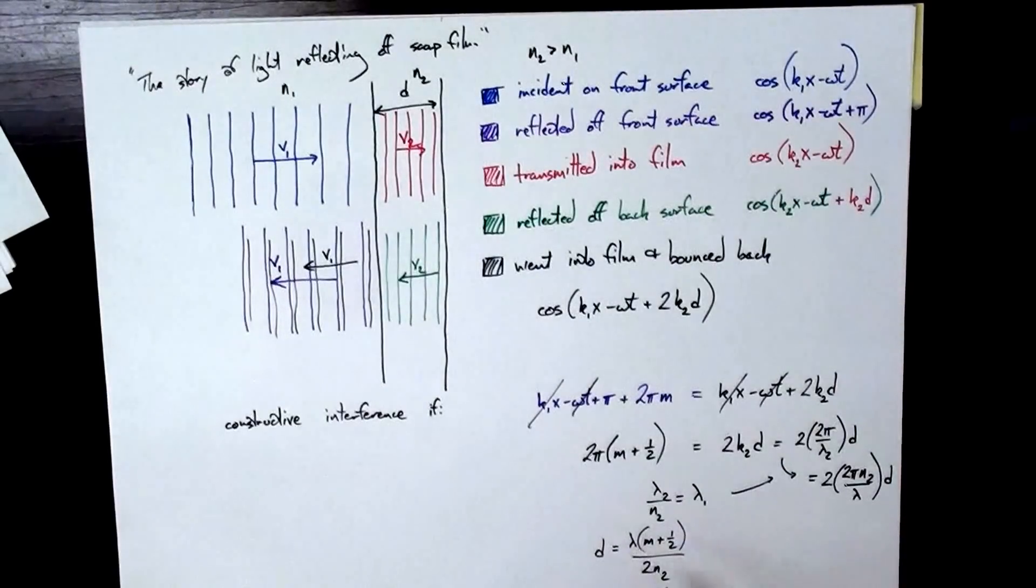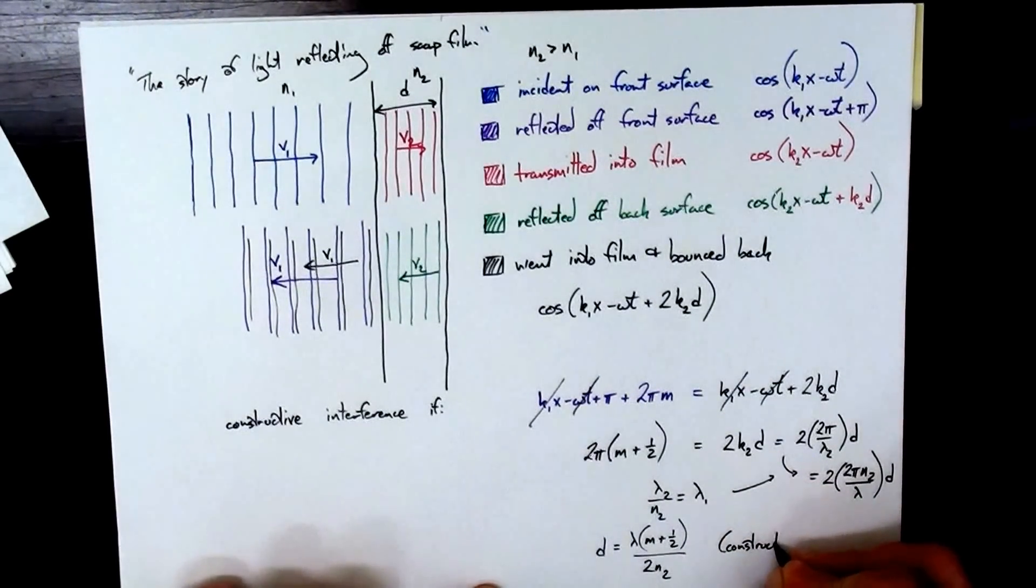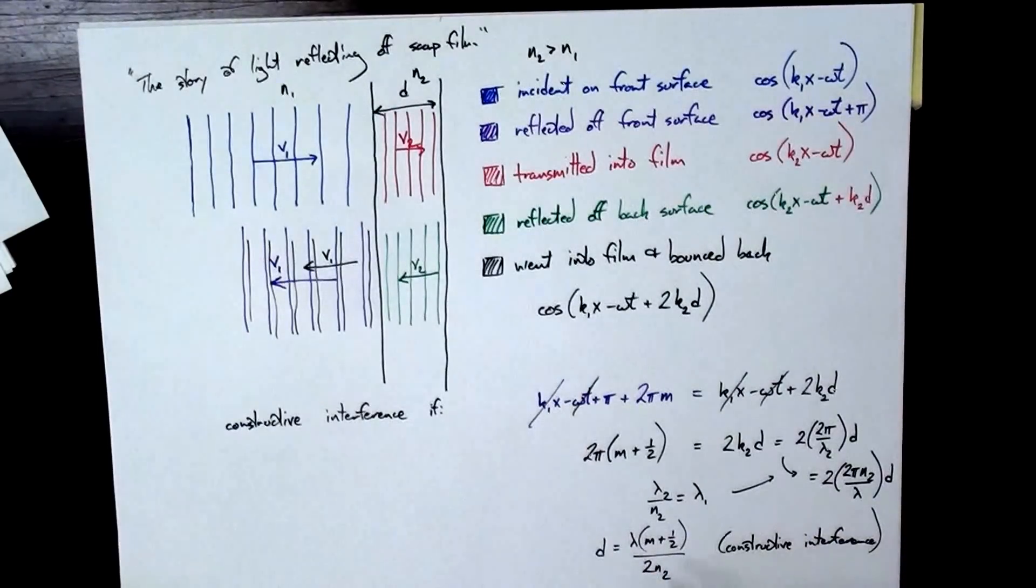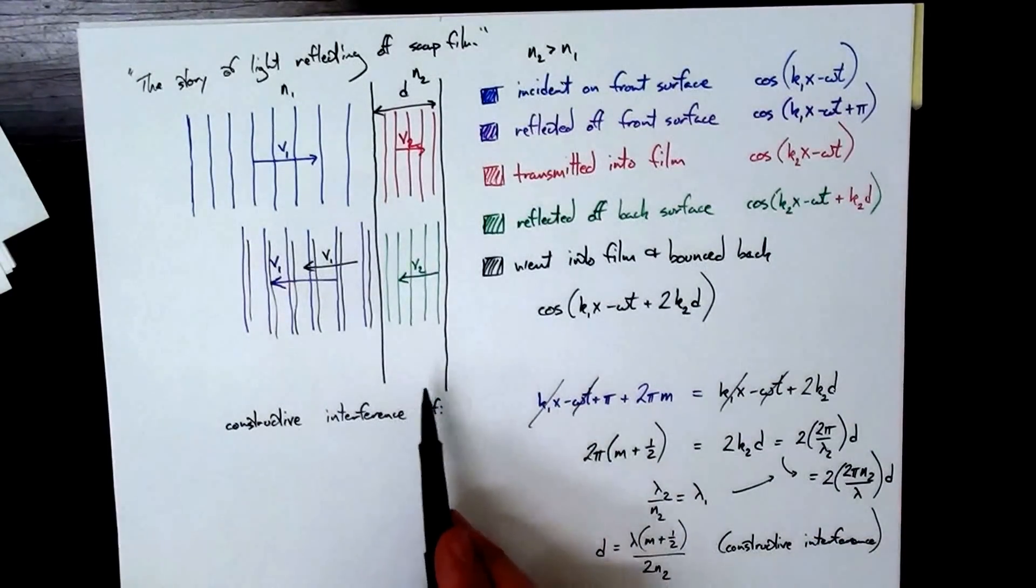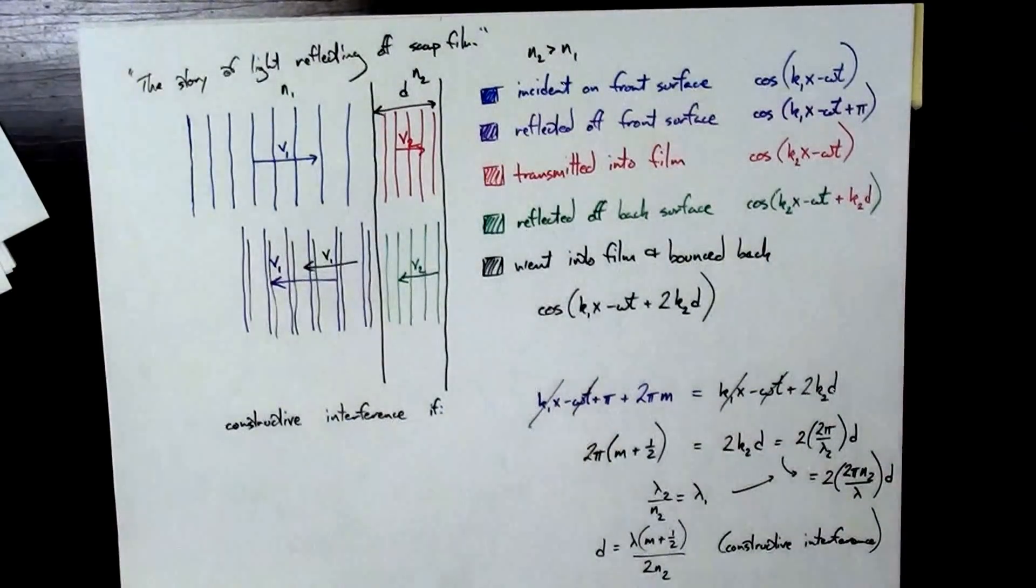So I get if d is equal to m plus 1 half times lambda over 2 times the index of refraction. So if the thickness of the film is equal to the wavelength times some number plus 1 half, some integer plus 1 half, divided by 2 times the index of refraction, then I get constructive interference. Now your book has a similar formula except it didn't consider that the film has an index of refraction, which it probably should. So here we've derived something a little bit better than the book and a lot better than I did in class. Thank you very much.